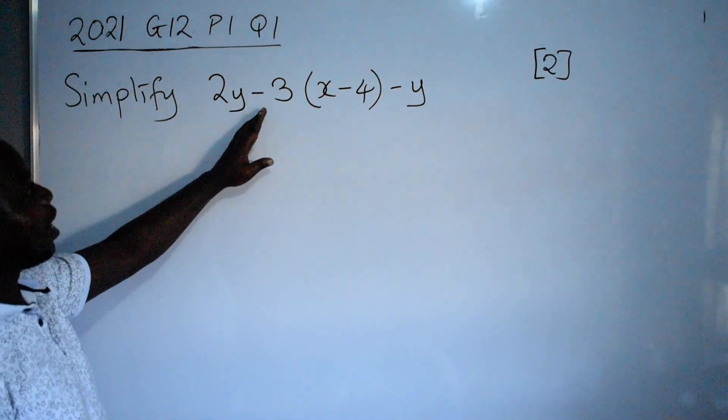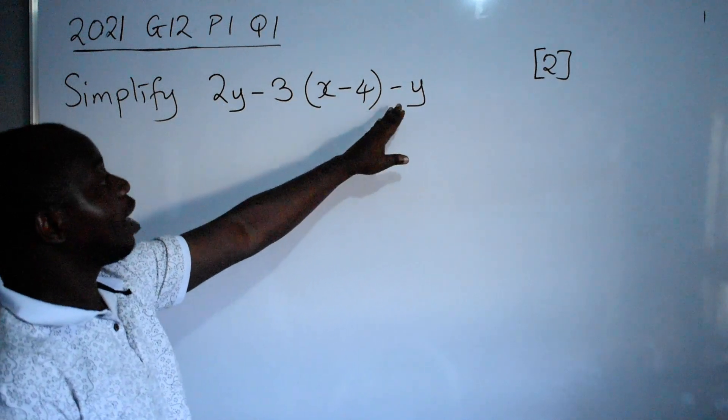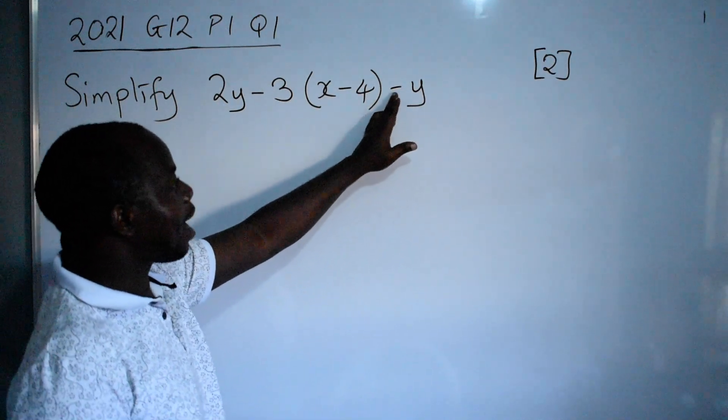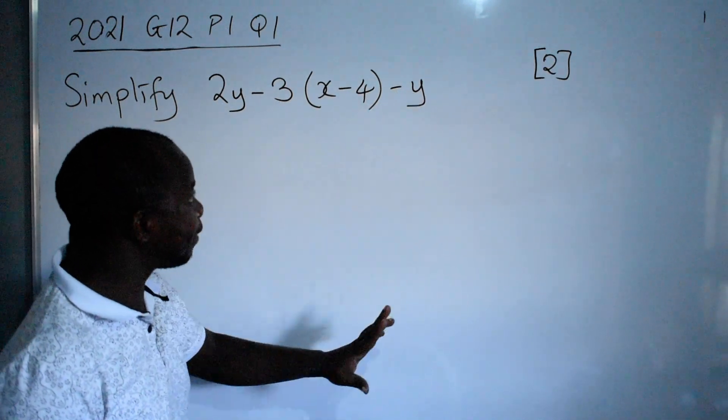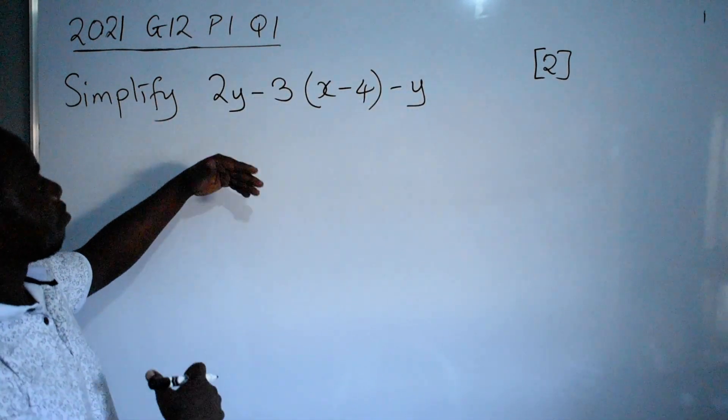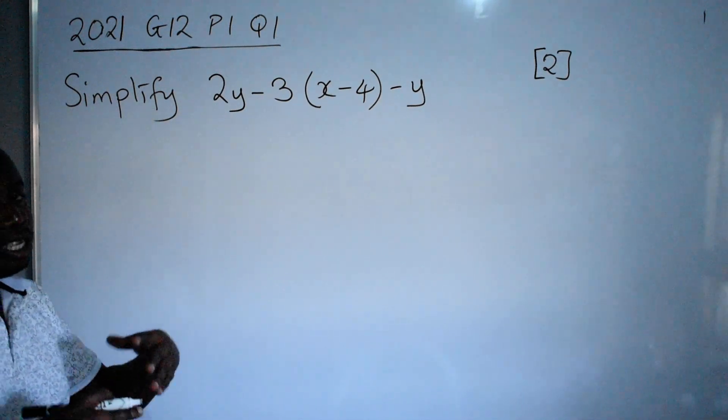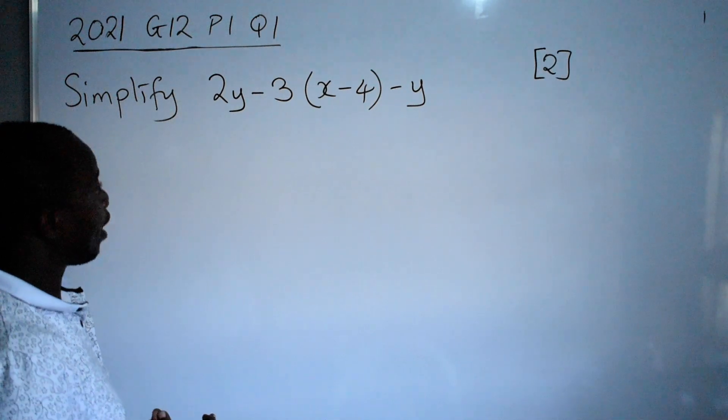2y minus 3 in brackets we have x minus 4 outside the brackets minus y. Alright, so this is not an equation but an expression. That's the reason why they're saying simplify. Just make it simple.